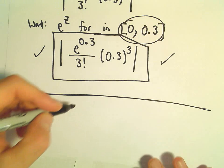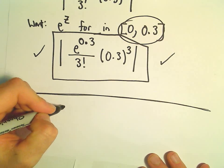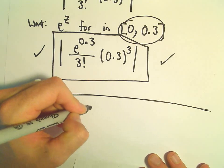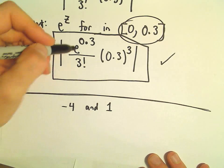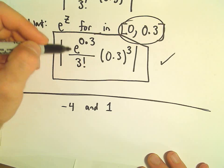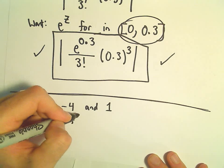Suppose we had a function and maybe it could take on values between negative 4 and positive 1. In that case, since we're taking the absolute values, suppose we had some generic function.